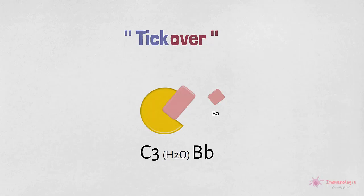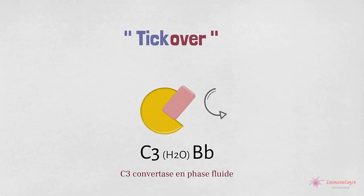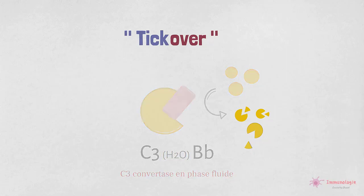Le complexe composé de C3H2O-Bb est appelé la C3-convertase de la phase fluide, car il reste dans le plasma sanguin et n'est lié à aucune cellule. Dans le plasma, la C3-convertase en phase fluide clive de nombreuses molécules C3, générant les fragments C3a et C3b. Mais elle n'est pas très stable, et elle se dégrade rapidement.